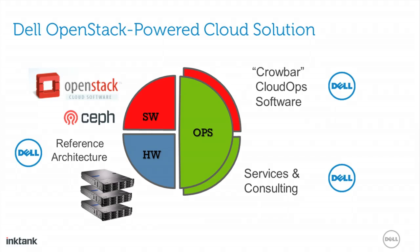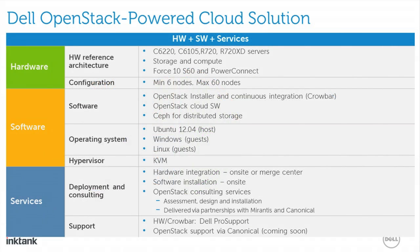This is how the current solution looks. On the software side we have OpenStack. Ceph is the OpenStack cloud storage solution. We have a reference architecture and taxonomy around the Dell hardware portfolio, and the big part is ops — that's where Crowbar comes in, along with services and consulting. We have hardware in the PowerEdge C and R series, four-strand switches and PowerConnect, OpenStack software, Crowbar as the installer, Ceph for distributed storage, Ubuntu 12.04 as the OS, supporting Windows and Linux guests, with KVM as the hypervisor.